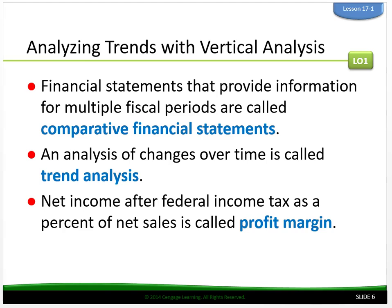Analyzing trends with a vertical analysis. Financial statements that provide information for multiple fiscal periods are called comparative financial statements. The vertical analysis ratios are presented next to each year's income statement amounts. An analysis of changes over time is called trend analysis. Comparing financial statement ratios over two or more periods is useful for identifying and correcting unfavorable trends. Management should analyze the trends indicated by changes in vertical analysis ratios.